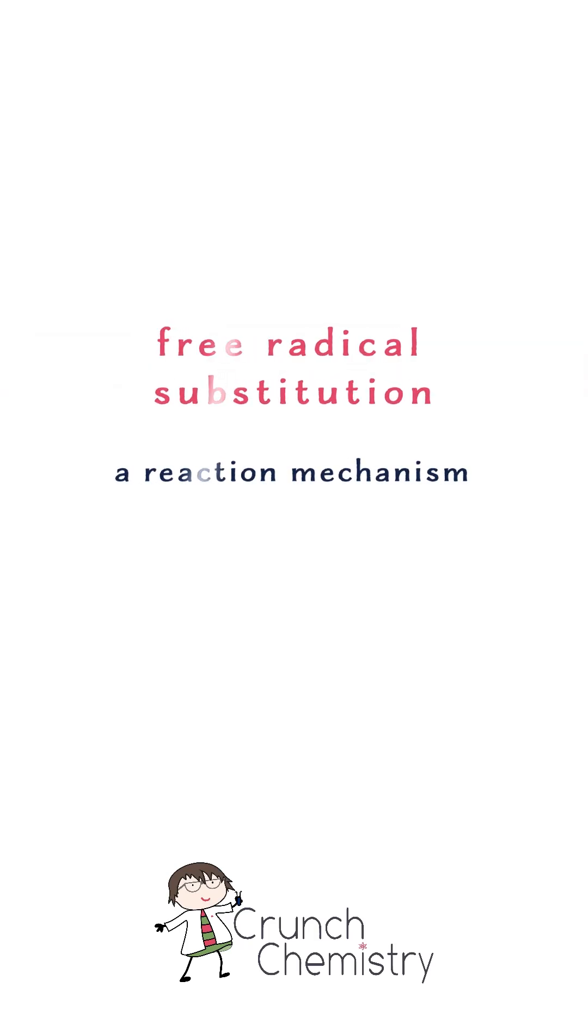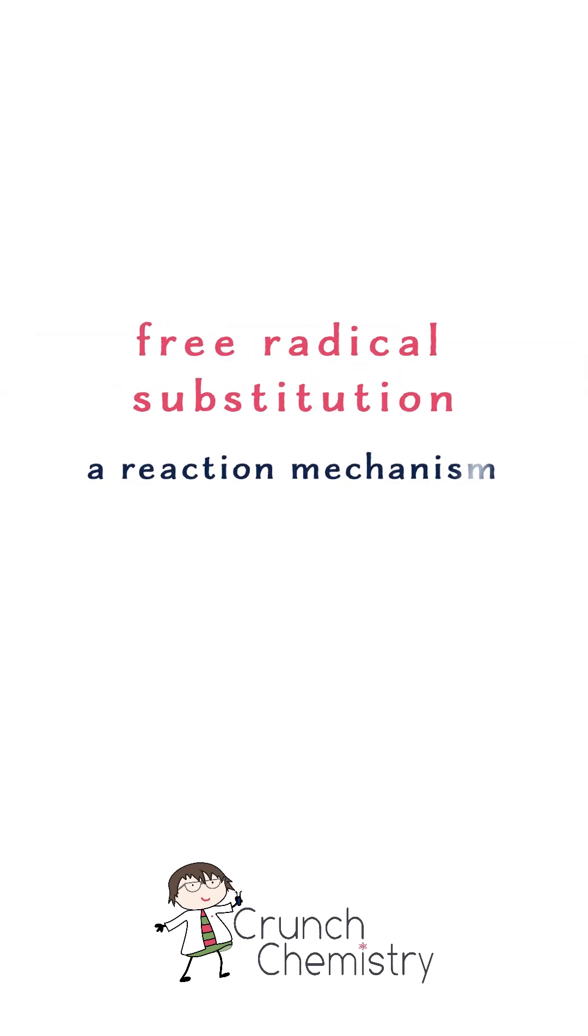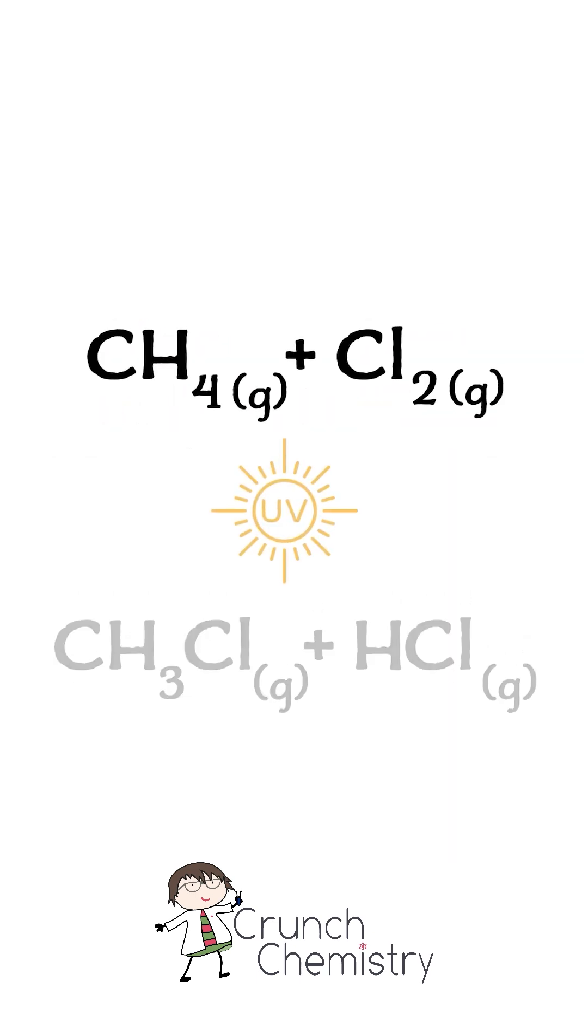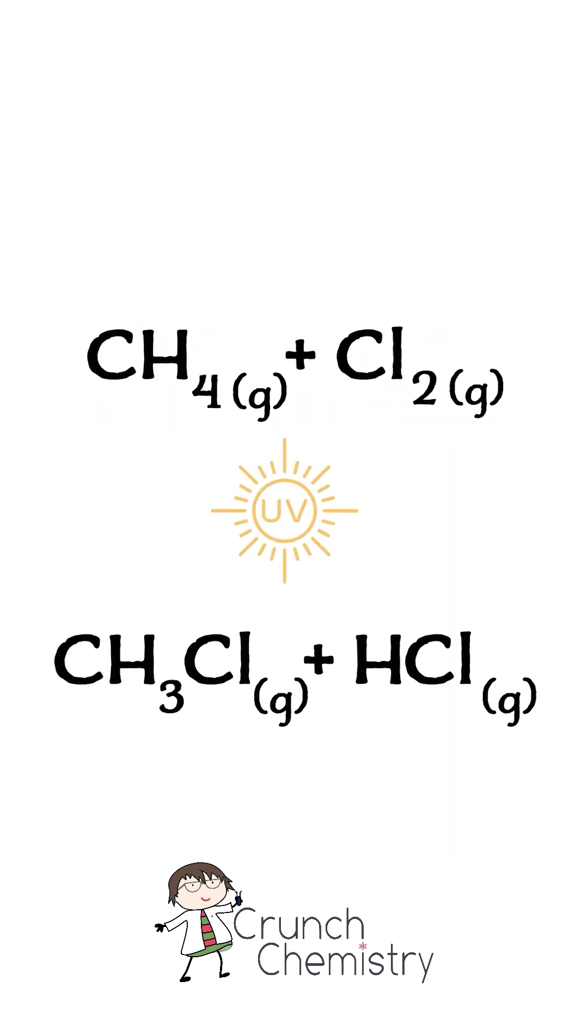Alkanes are exceptionally unreactive molecules, boring even chemically speaking, but we can persuade them to react with halogens, the group 7 elements, in the presence of high-energy UV light.